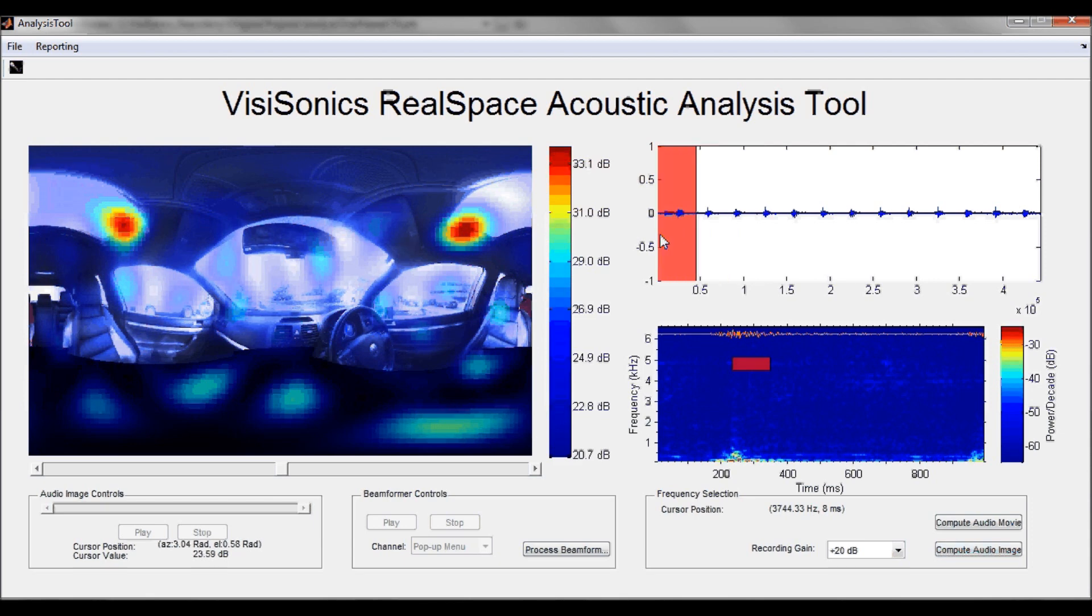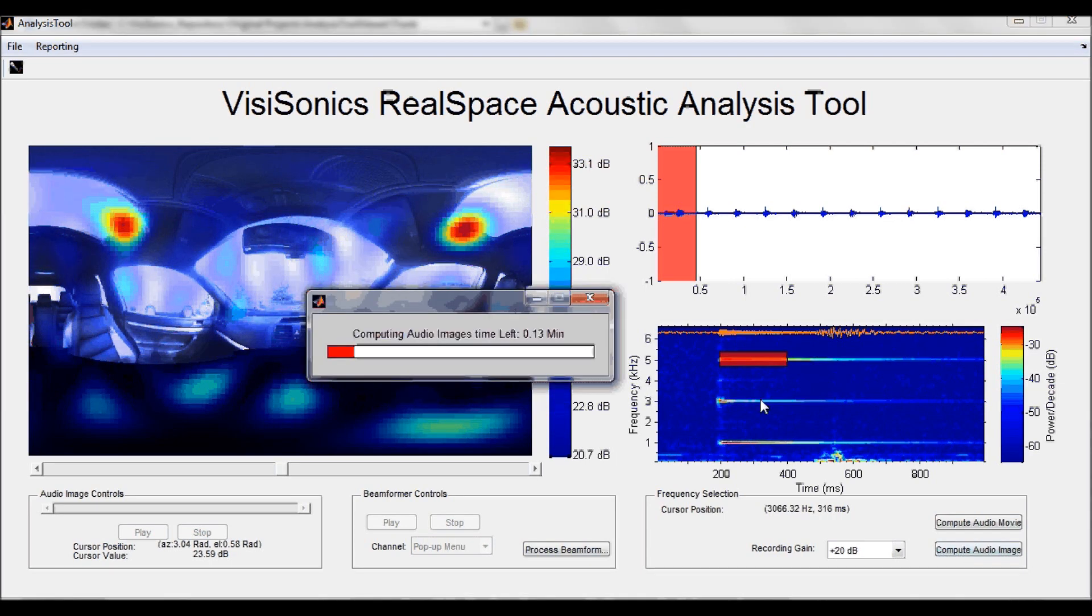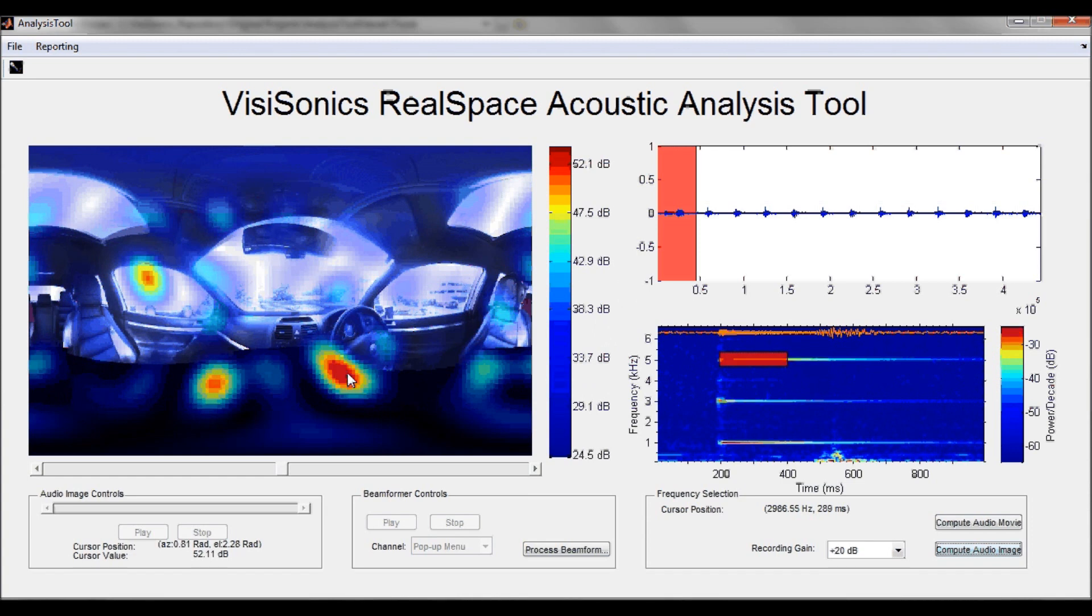At the beginning of this recording, we can see that the dashboard was actually alarming. If we're interested to see what the distribution of that alarm sound is, we can highlight it and compute an audio image. Here, the buzzer is located to the left of the driver's window, or the driving wheel. We can also see some additional reflections off the mirrors from this stationary tone.